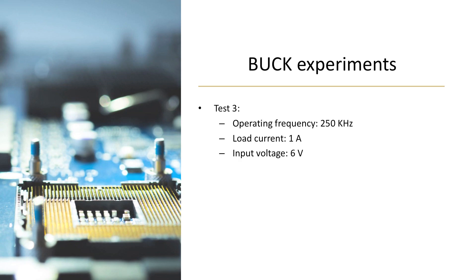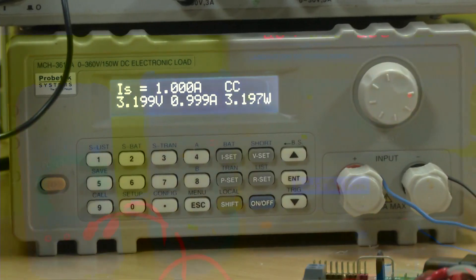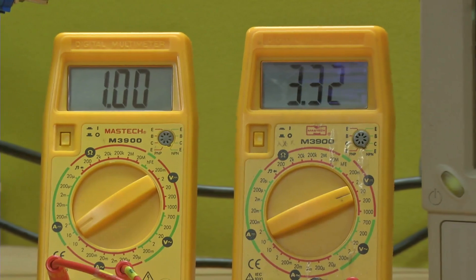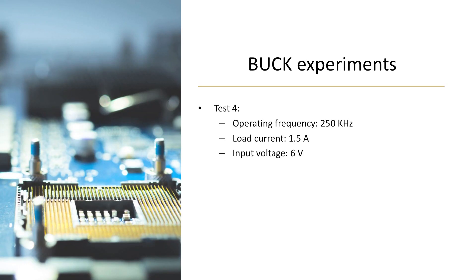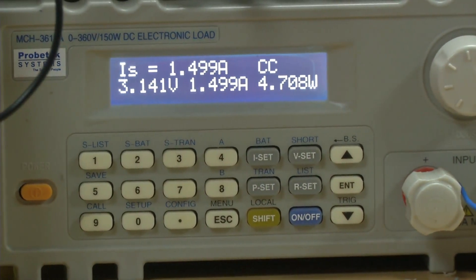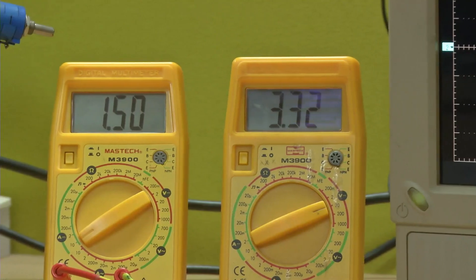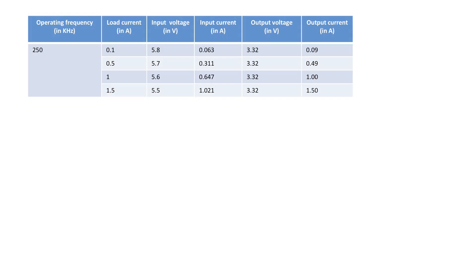Now the load current will change to 1 ampere and we repeat the same experiment. What is important is for you to look at the inductor current once again — that is nothing but the load current. The experiment can go on and you can change the load requirement to 1.5 amps. Again, look at what is at the input and output, and observe the inductor current waveform.